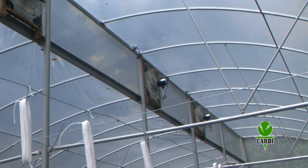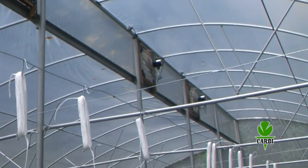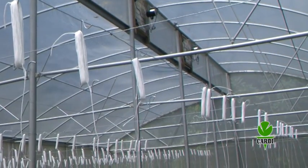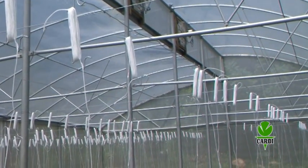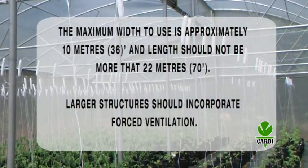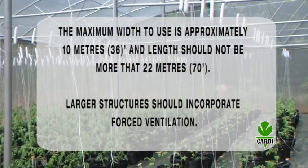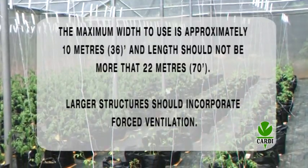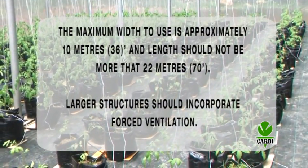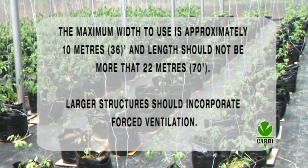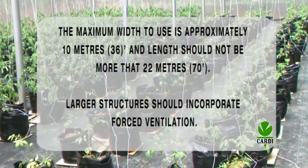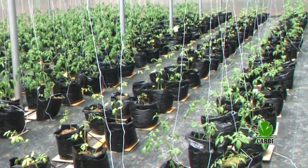With regard to size, the larger the growing surface area under cover under the same height, the greater the internal temperature, and therefore the greater the need for ventilation. The maximum width to use is approximately 10 meters or 36 feet, and the length should not be more than about 22 meters or 70 feet. For larger structures wider than 10 meters and longer than 22 meters, forced ventilation is recommended.